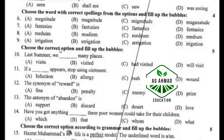A option, choose the correct option. B option: D for dog. A option: if a rash appears, stop using ointment. C option: the synonym of reward is prize. D option: the antonym of abundant is sport. A option: have you got anything that these women could take for their children? A option.